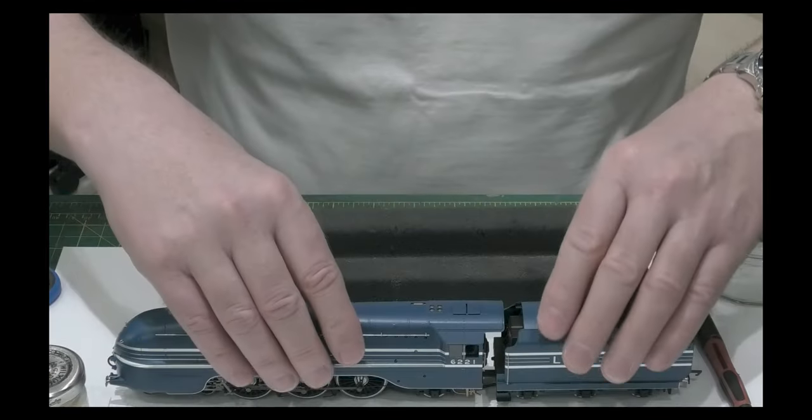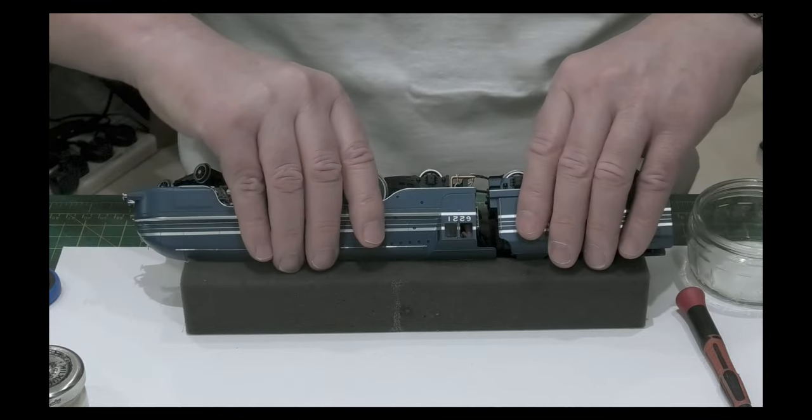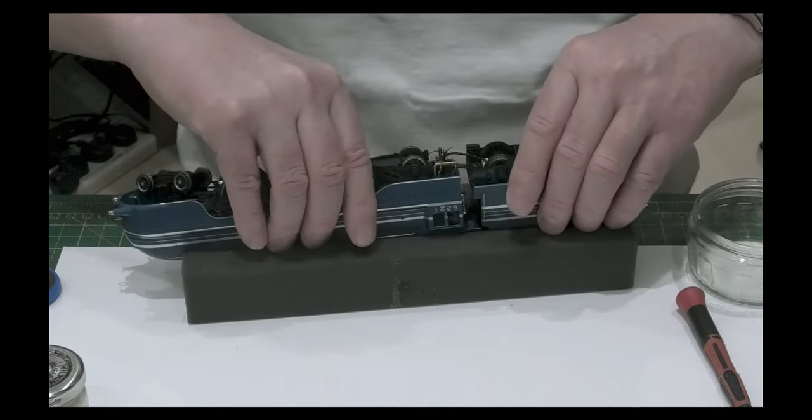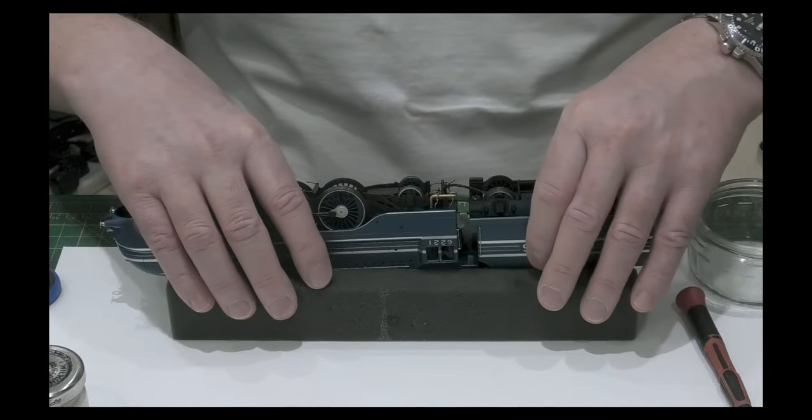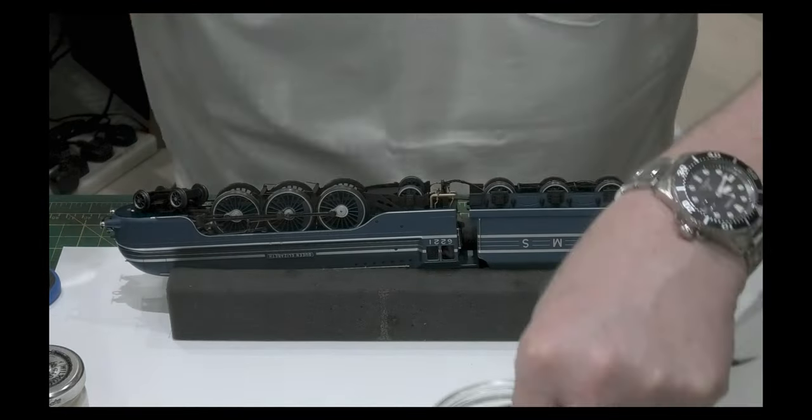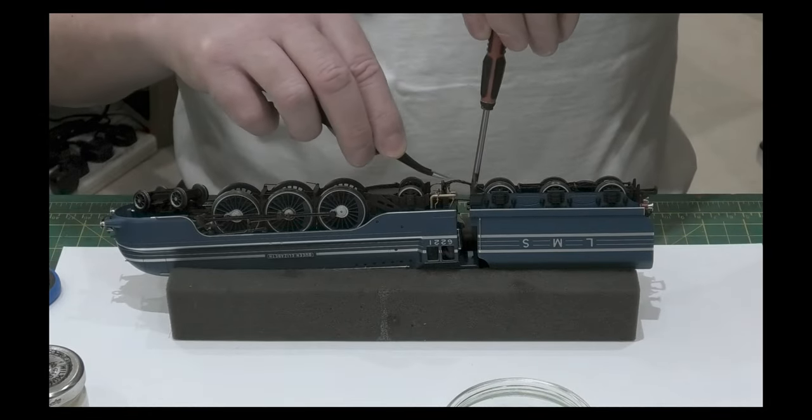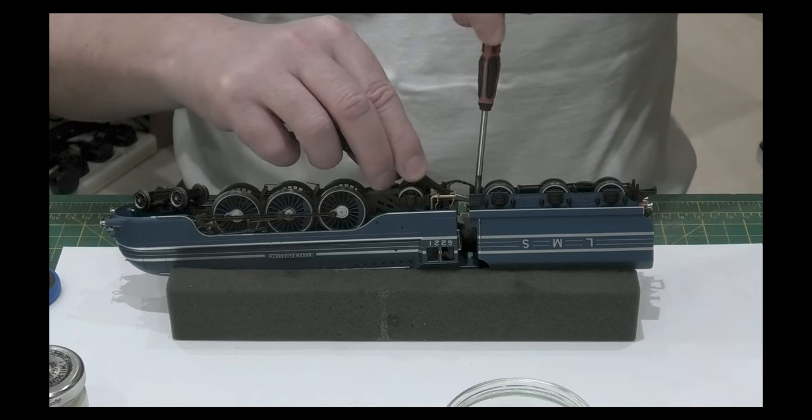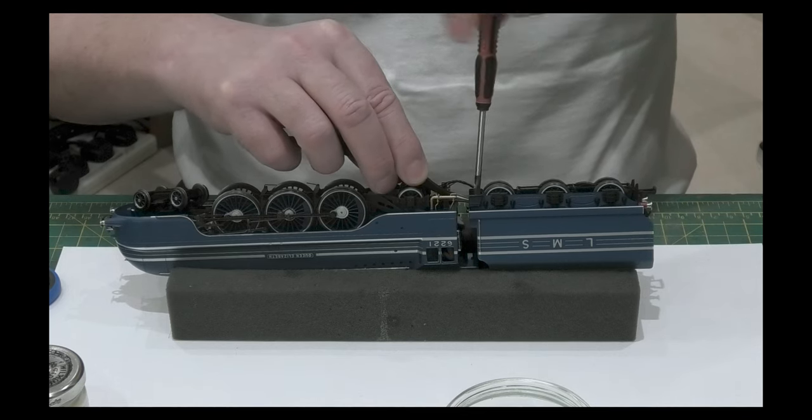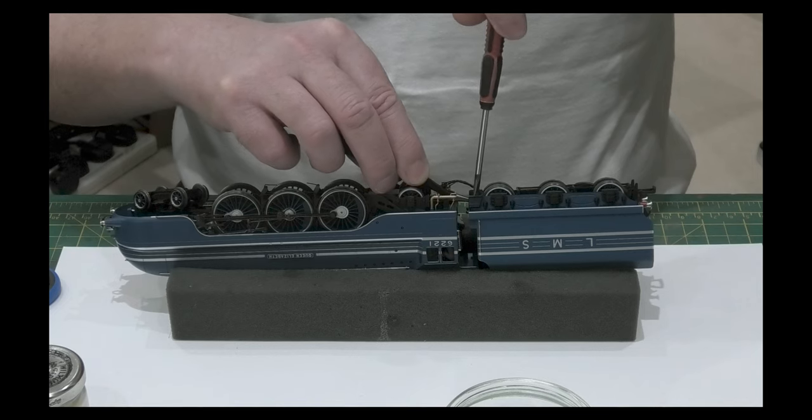The first thing to do is remove the loco from the tender. I've seen some people leave the loco attached, however the problem with doing that is if you have a wayward screwdriver and it goes flaying into your expensive loco, suddenly that's the end of the loco.